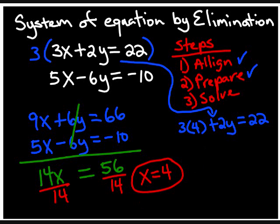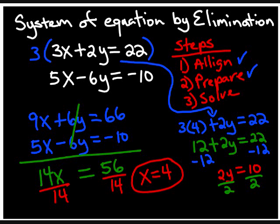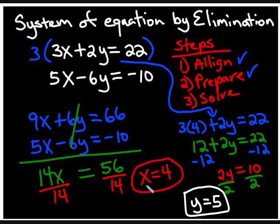So then 3 times 4 becomes 12, plus 2y is equal to 22. We subtract 12 from both sides and get 2y is equal to 10. Then we divide both sides by 2 and find that y is equal to 5. So my answers are x is equal to 4 and y is equal to 5.